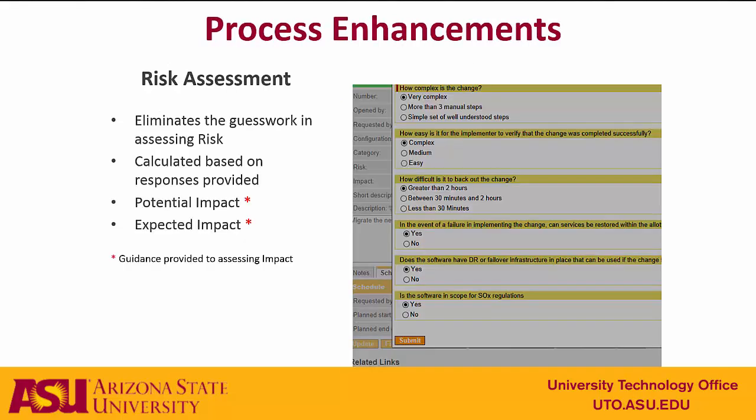Another process enhancement is the risk assessment. This is a survey of questions that pops up when you create a record, and it helps you define the potential impact and the expected impact. Once you've filled out the survey, you click on a link to execute the risk calculation. Depending on that calculation, more or fewer approvals will be needed for the change.